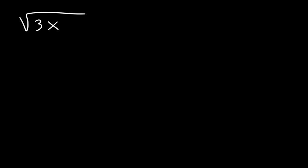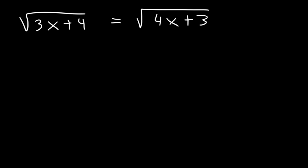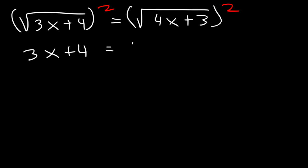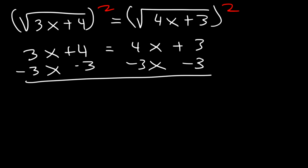Now, what about this one: the square root of 3x plus 4 is equal to the square root of 4x plus 3. Go ahead and find the value of x. In this example, we're going to take the square of both sides, and the radicals will disappear. Therefore, 3x plus 4 equals 4x plus 3. Subtract both sides by 3x and by 3: 4 minus 3 is 1, and 4x minus 3x is x. So x is equal to 1.